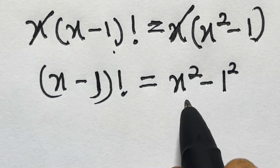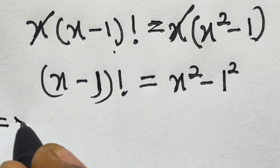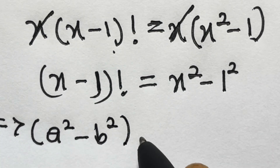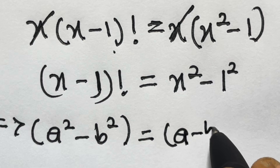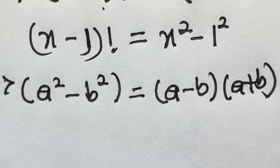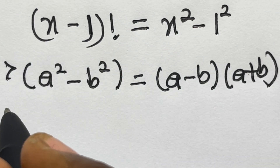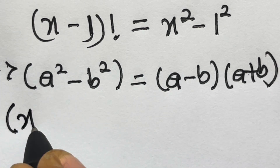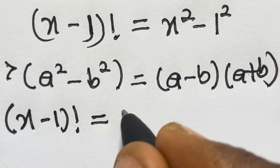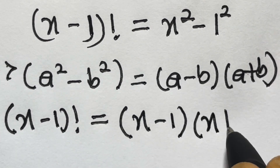Now let's recall the difference of two squares: where we have a squared minus b squared, this gives us a minus b times a plus b. So applying this to x squared minus 1, we get x minus 1 factorial equals x minus 1 times x plus 1.